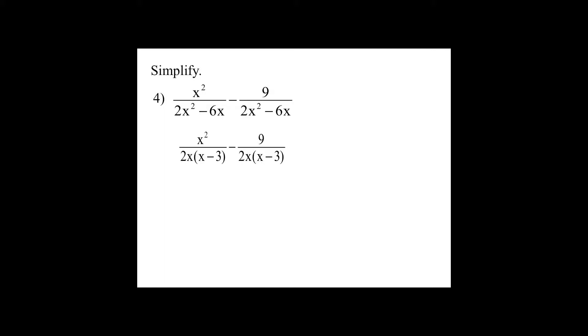Now check your work. When I factor that denominator I get 2x over x minus 3. Now I'm going to put it all over 2x minus 3 and look what I'm left with. x squared minus 9.